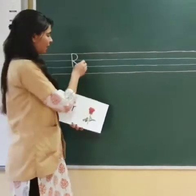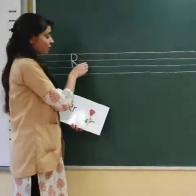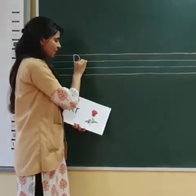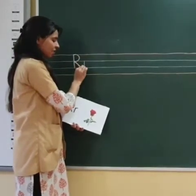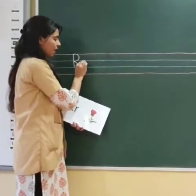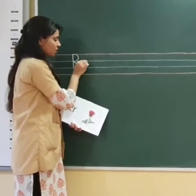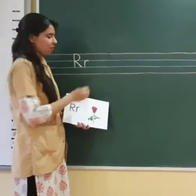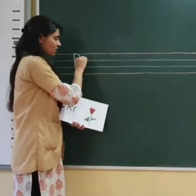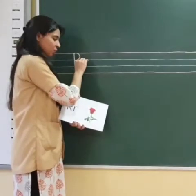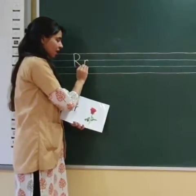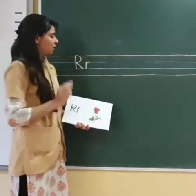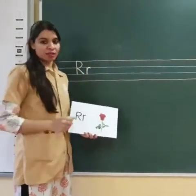Now how do we write small r? We write between the blue lines. We will draw one straight standing line, go up again, and a curve. That gives us small r. Once again: a straight standing line between the blue lines, down, again up, and a curve gives us small r.